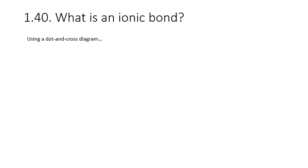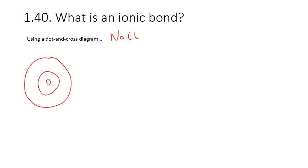Now let's represent this in a dot and cross diagram for sodium chloride. We start off with a sodium atom, electron configuration 2, 8, 1. I'm going to draw all of the sodium electrons in blue as dots — two electrons in the first shell, eight in the second shell, and one in the third shell. That is sodium.